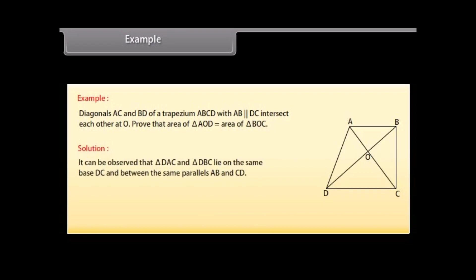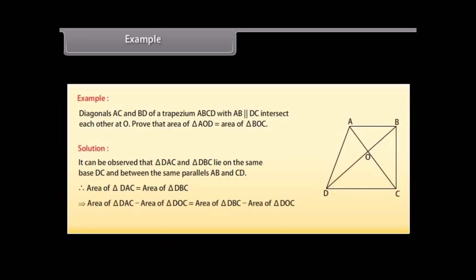It can be observed that triangle DAC and triangle DBC lie on the same base DC and between the same parallels AB and CD. Therefore, area of triangle DAC is equal to area of triangle DBC. Which implies, area of triangle DAC minus area of triangle DOC is equal to area of triangle DBC minus area of triangle DOC. Which implies, area of triangle AOD is equal to area of triangle BOC.